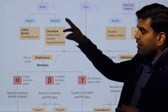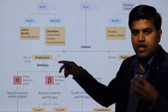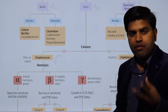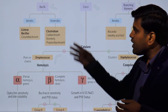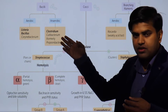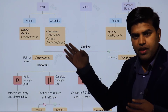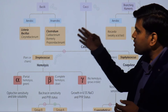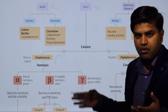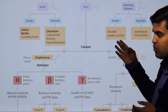Among gram positive bacilli, they can be divided into aerobic and anaerobic. Aerobic means they survive in the presence of oxygen; anaerobic means they do not. Aerobic examples include Listeria, Bacillus anthracis causing anthrax, Listeria monocytogenes causing meningitis, and Corynebacterium diphtheriae causing diphtheria. Anaerobic gram positive bacilli include Clostridium and Cutibacterium, formerly known as Propionibacterium.